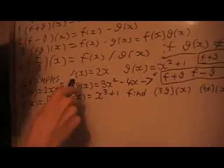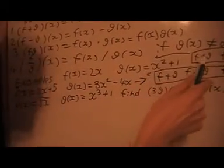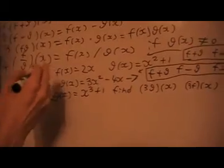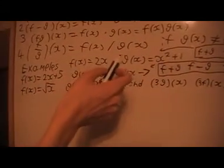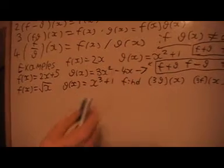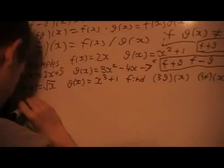First example, we've got f of x is 2x and g of x is x squared plus one. We want to find f plus g of x. So we've got this f of x here which is 2x and g of x here which is x squared plus one. What we'll do is we'll add them by the rule here.